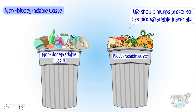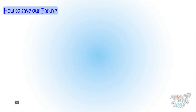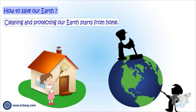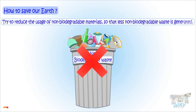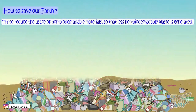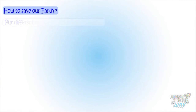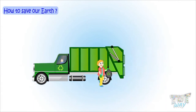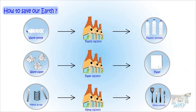Cleaning and protecting our earth starts from our home. We should reduce the use of non-biodegradable materials so that less non-biodegradable waste is generated. We should also keep different types of waste in different bins, collect them separately, and then send each type of waste to the appropriate recycling center.